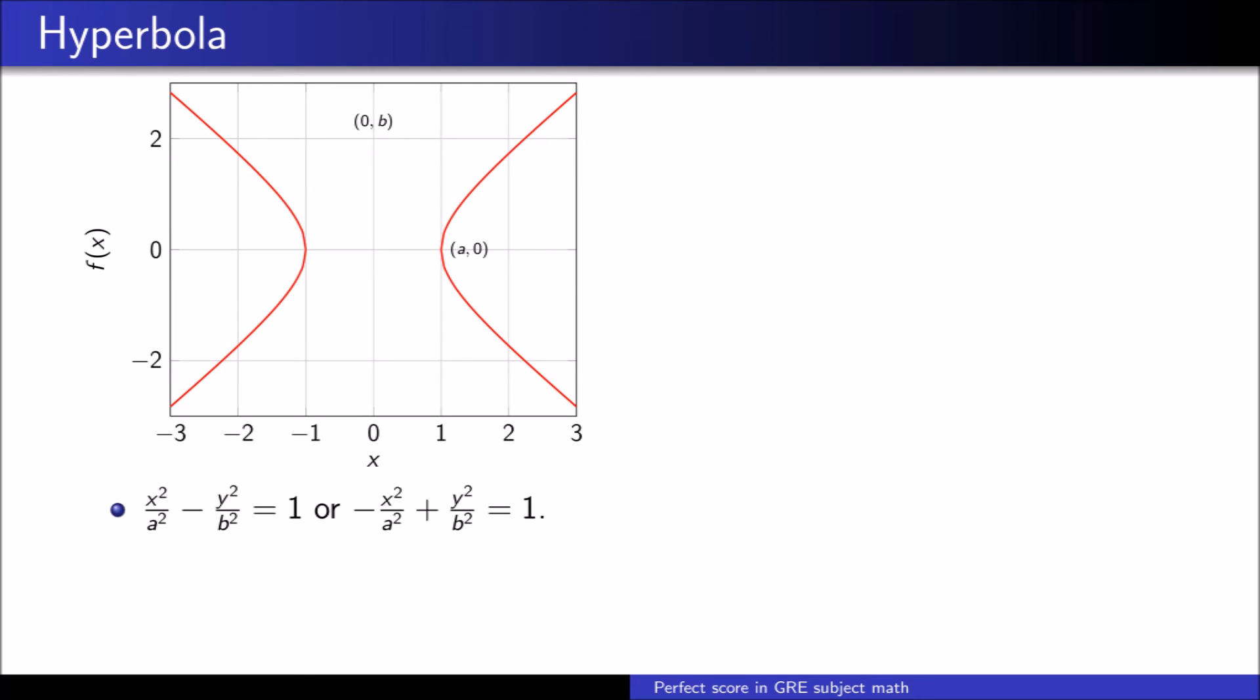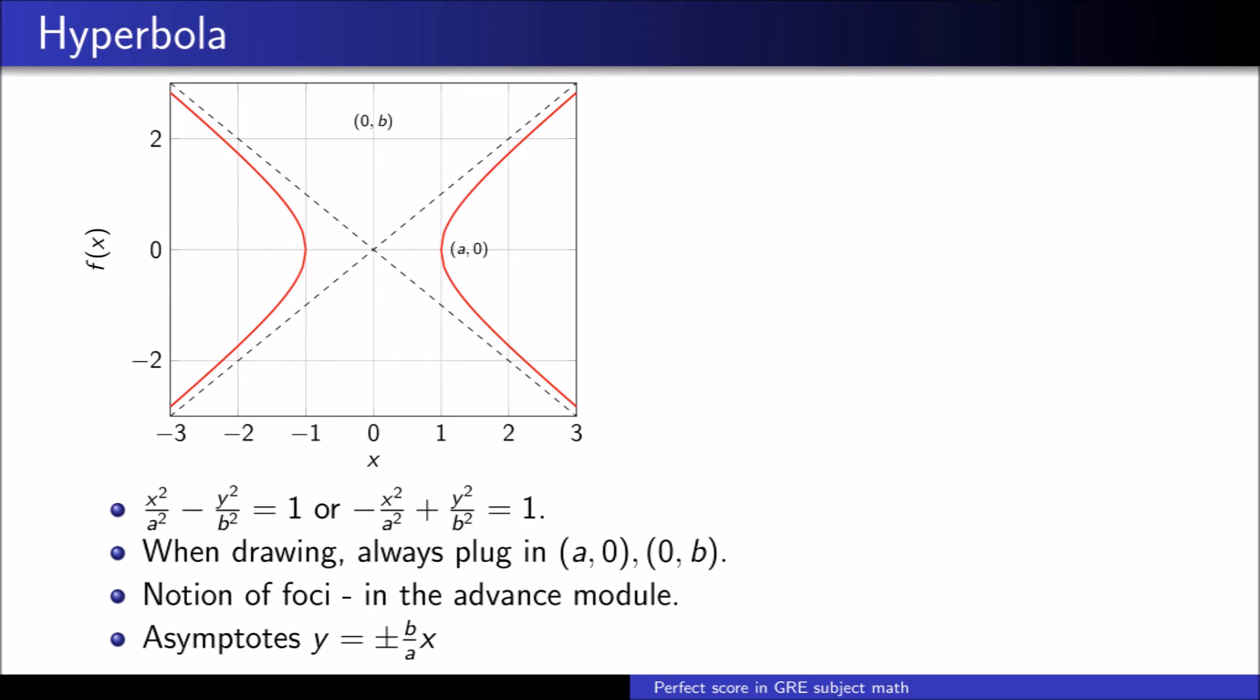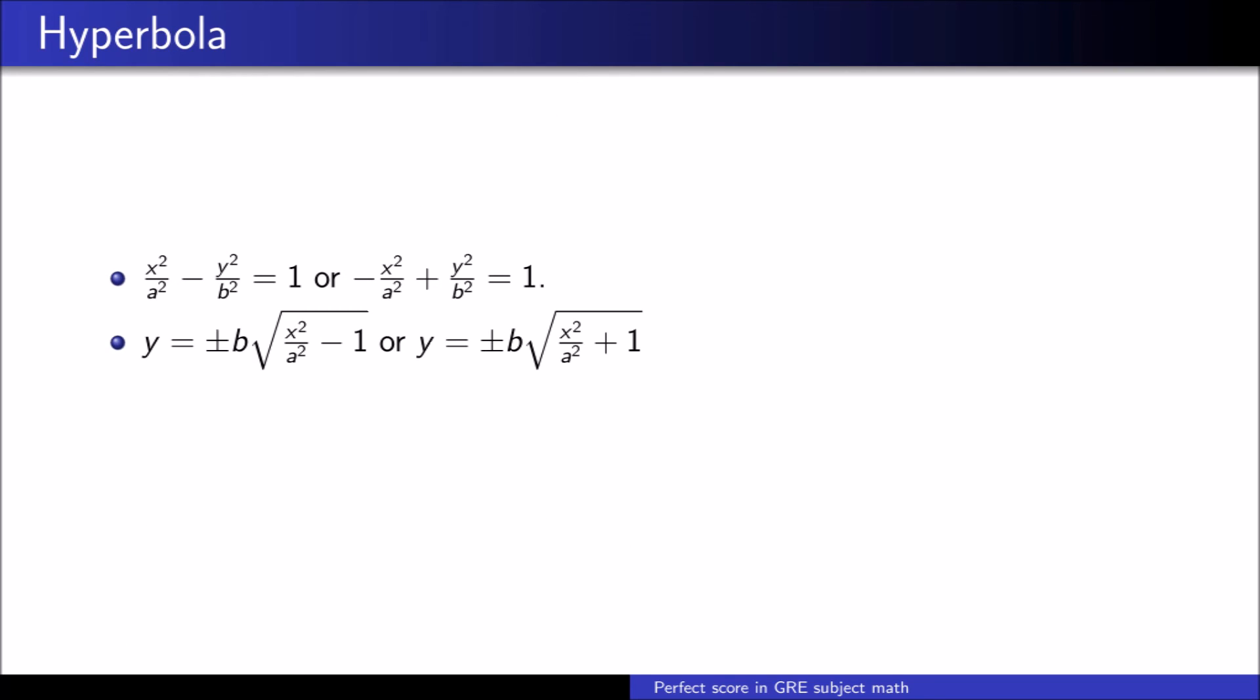The hyperbola is represented by these equations. Depends on the orientation. Here also, remember to plug in (a,0), (0,b) which will give you the orientation. The notion of the foci of the hyperbola does not repeat often enough in the exam to justify talking about it right now. But, we will talk about it in the advanced module. The hyperbola has asymptotes of plus minus b over a, x. Regardless of the orientation, we have the same asymptotes. Let's see that. Solve for y and see that when x is very large, such that plus 1 or minus 1 are insignificant, we get the asymptotes as required.